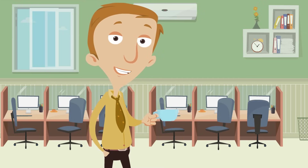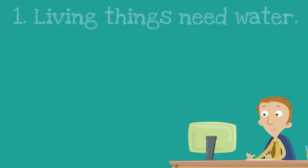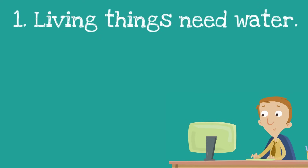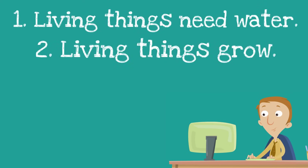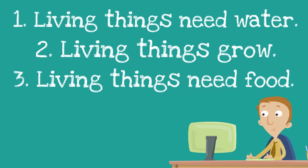Let's go over the clues again — the clues to figure out if something is a living or non-living thing. First, living things need water. Second, living things grow — they go from being tiny to full grown; they develop over time. Third, living things need food. Living things can have different ways of getting that food: either through eating like we do, using sunlight to make food like plants do, or absorbing food like fungi. But all living things need food.